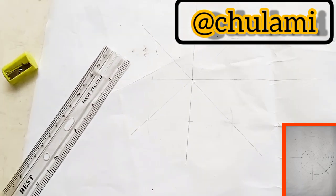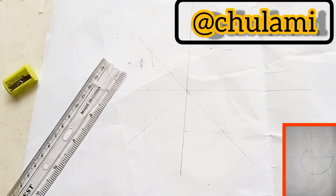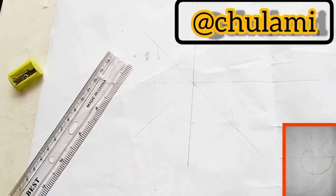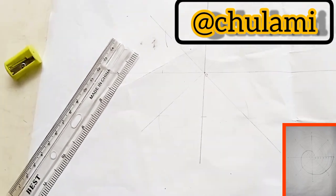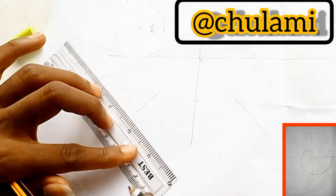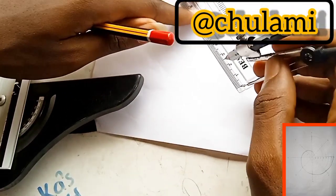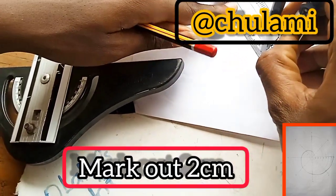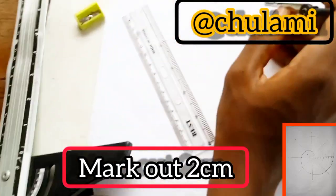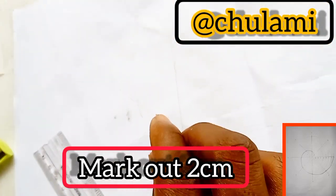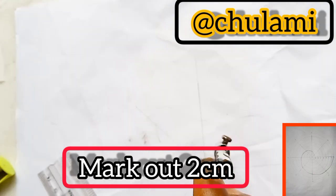Now the next thing for us to do is that we get our compass. And then maybe at any radius of your choice. But I will advise us to use 2cm for a start. This is 2cm. And pivot it at point zero and mark out that 2cm.